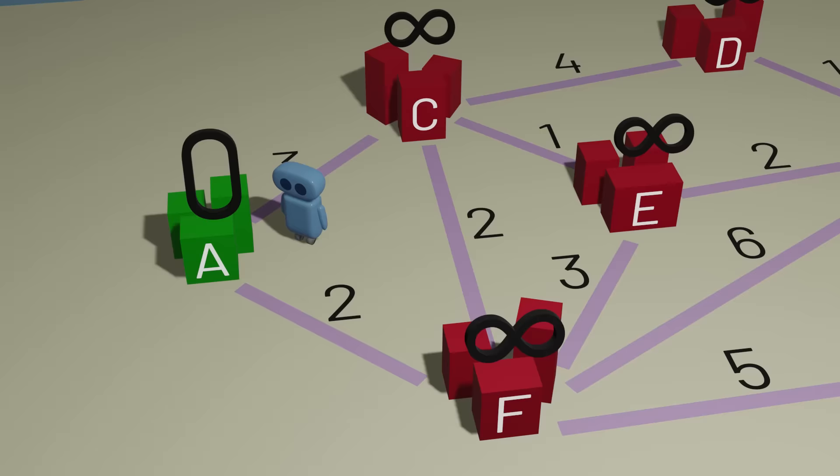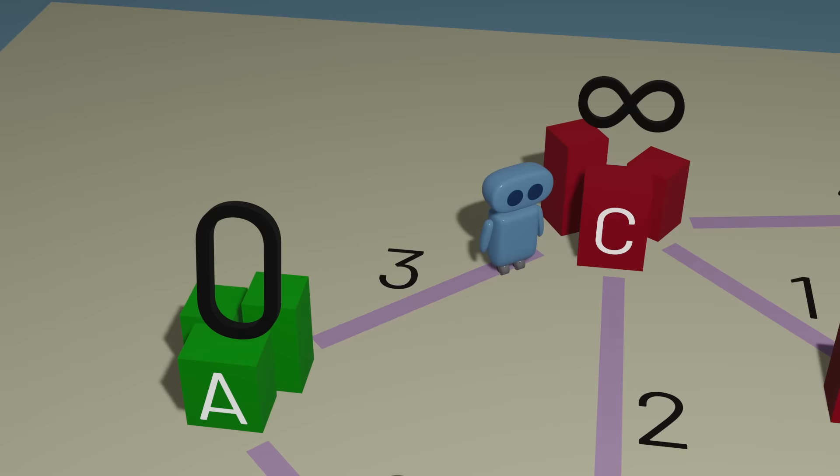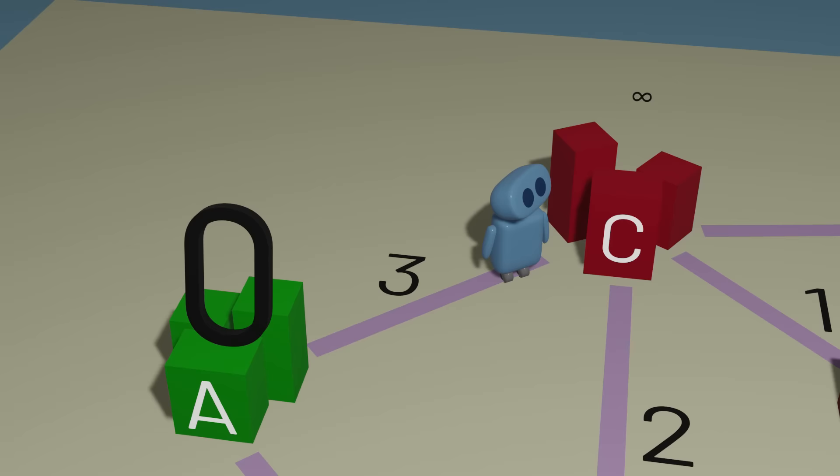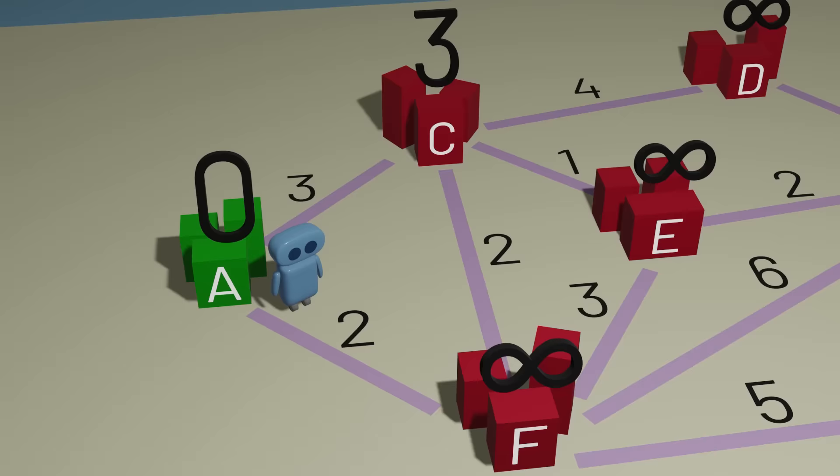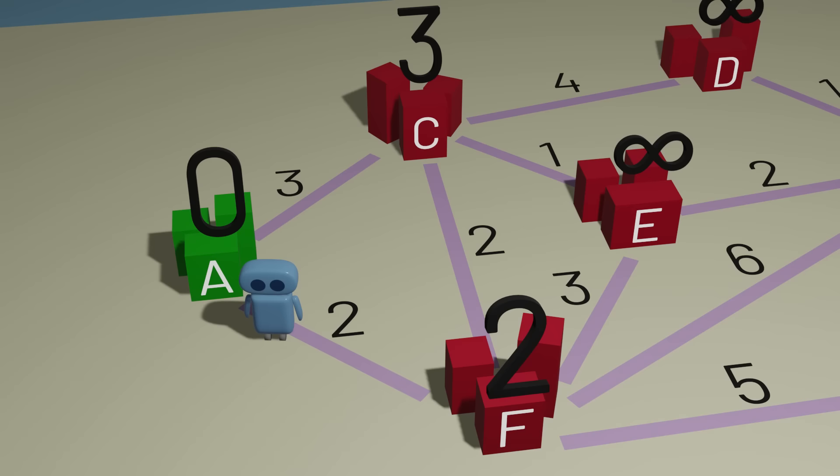We know we can get to town A in zero minutes. And because we can get from town A to town C in three minutes, we know we can get to town C in three minutes. That's much better than our current estimate of infinity, so we'll update our estimate to be three. And we can do something similar for town F. We can get there in two minutes, so we'll update our estimate. After we've considered all possible roads connected to town A, we're done with this step.